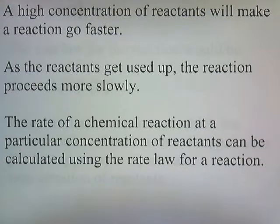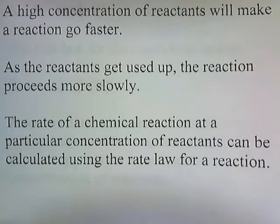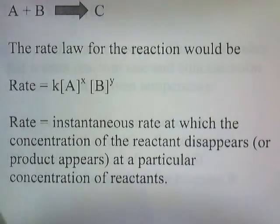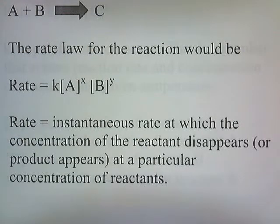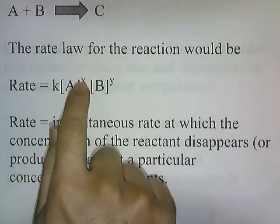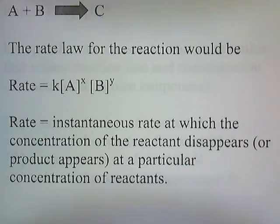A high concentration of reactants will make the reaction go faster. As the reactants get used up, the reaction proceeds more slowly. The rate of a chemical reaction at a particular concentration of reactants can be calculated using the rate law for a reaction. Suppose we have a chemical reaction where A plus B gives us C. The rate law for the reaction would be: rate equals K times [A] to the X times [B] to the Y. The rate is the instantaneous rate at which the concentration of the reactant disappears or product appears at a particular concentration of reactants.